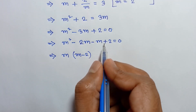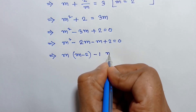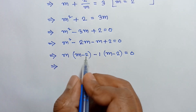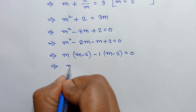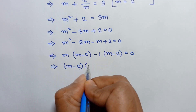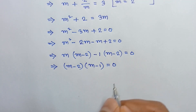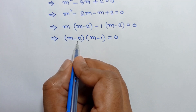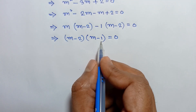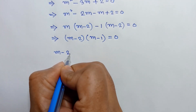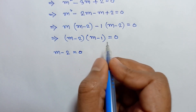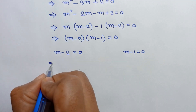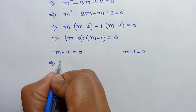We can factor this as m times m minus 2 minus 1 times m minus 2 is equal to 0. Taking common factor m minus 2, we get m minus 2 times m minus 1 is equal to 0. So either m minus 2 equals 0 or m minus 1 equals 0.